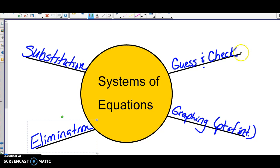So guess and check is the hardest one, most cumbersome, least effective. Graphing works if there are whole numbers, but the problem comes in when there's fraction answers. Substitution works great if you have something that says y equals or x equals. Elimination works for all.